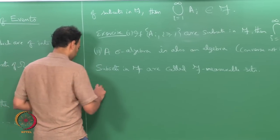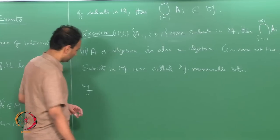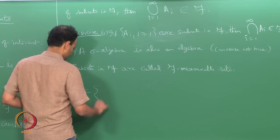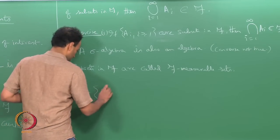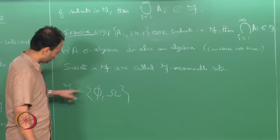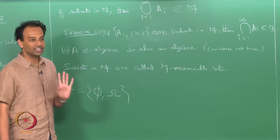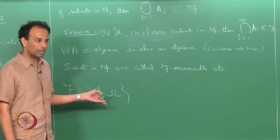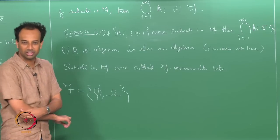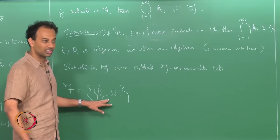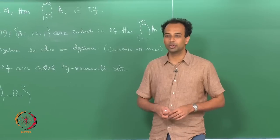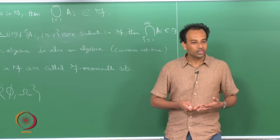There are some trivial examples of sigma algebras. The most trivial sigma algebra on any sample space omega is the collection containing only the null set and the sample space itself. This is a sigma algebra — a very trivial one. It is of no use in most situations, but it is a valid sigma algebra. This shows that you can build many sigma algebras for a given sample space, and which one you work with depends on what you are interested in.